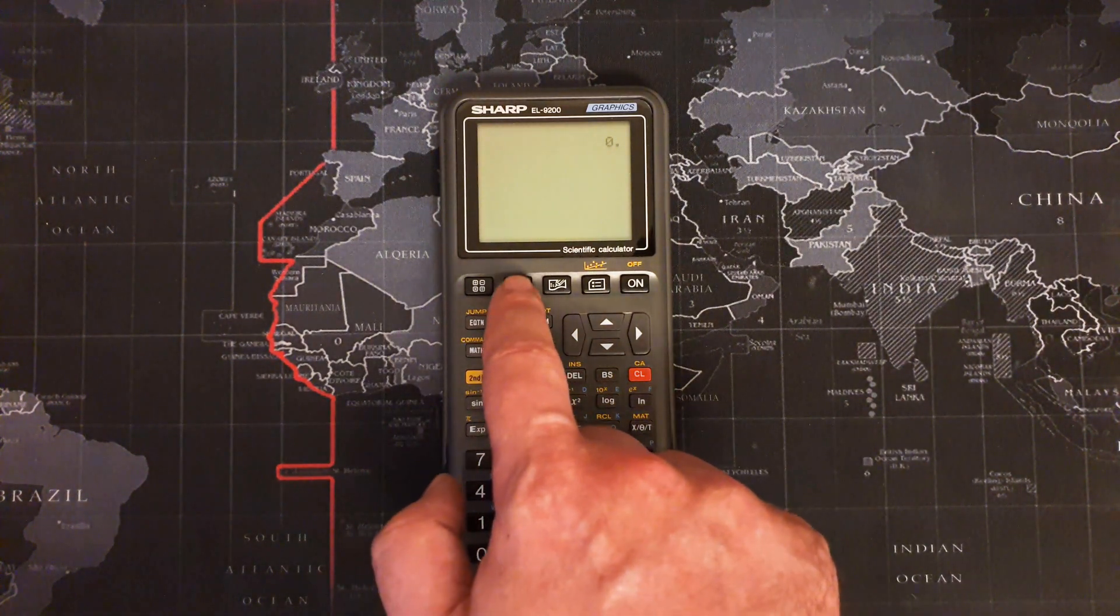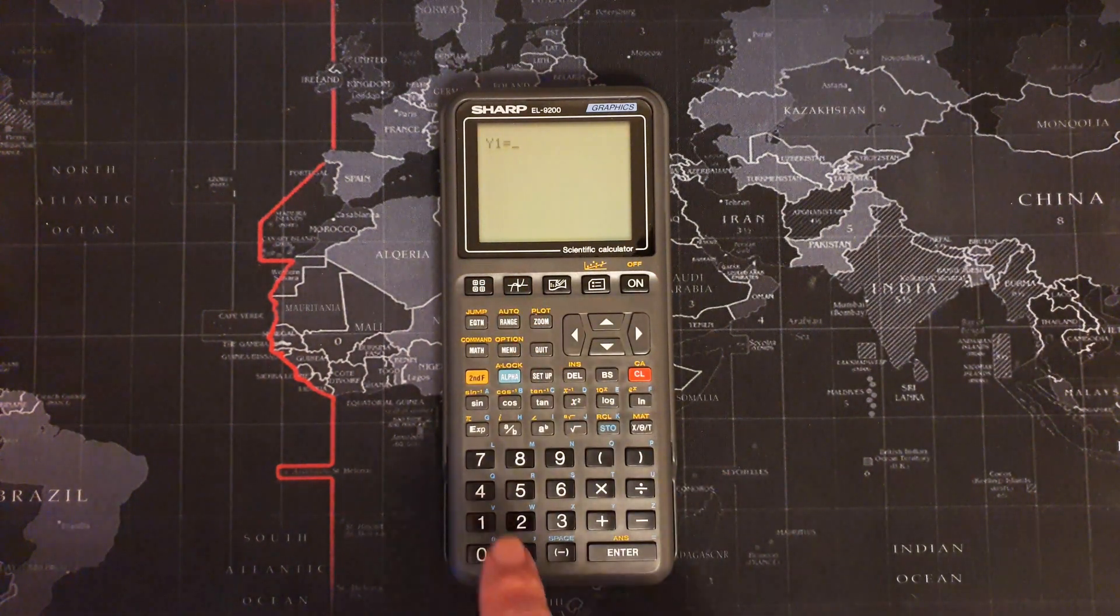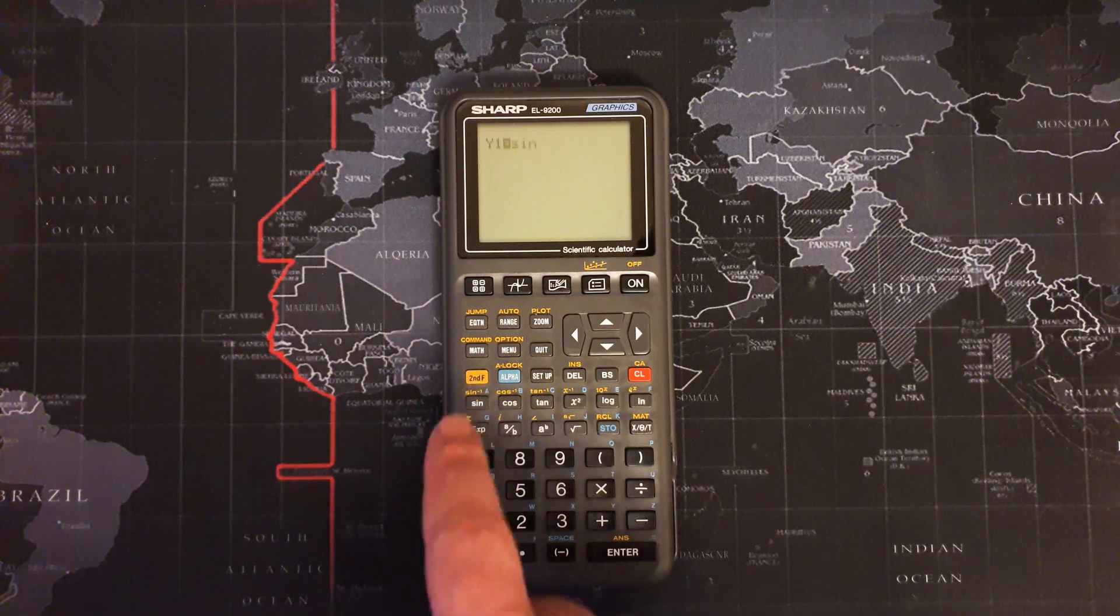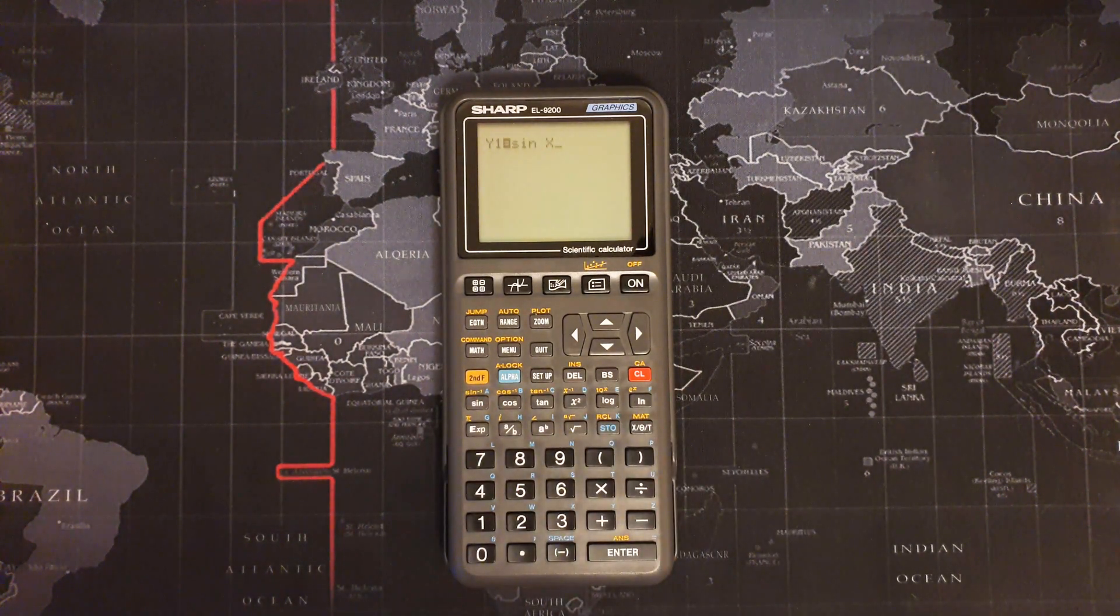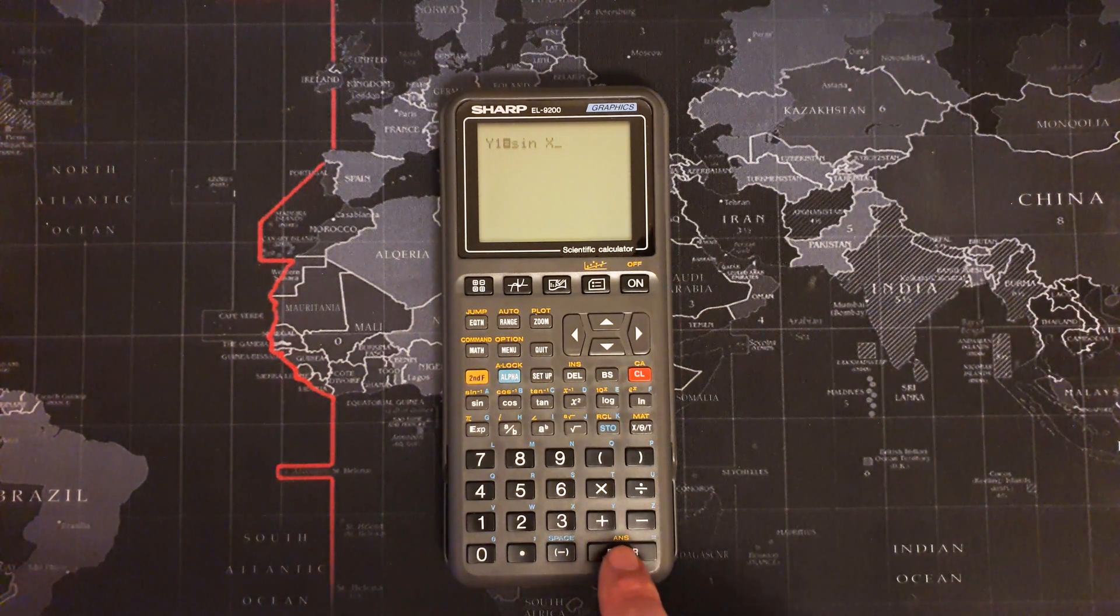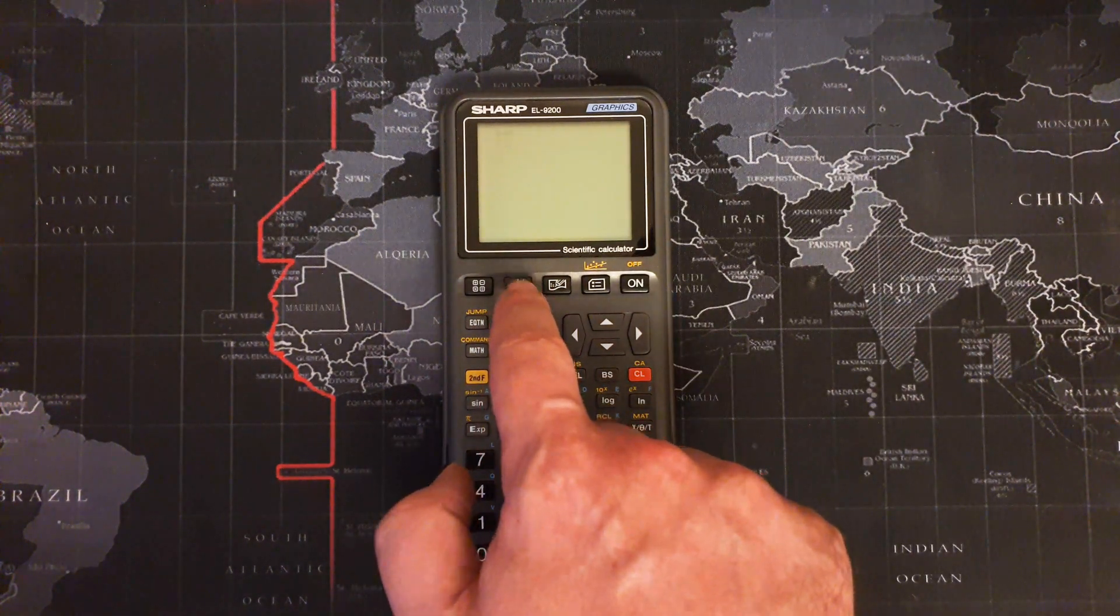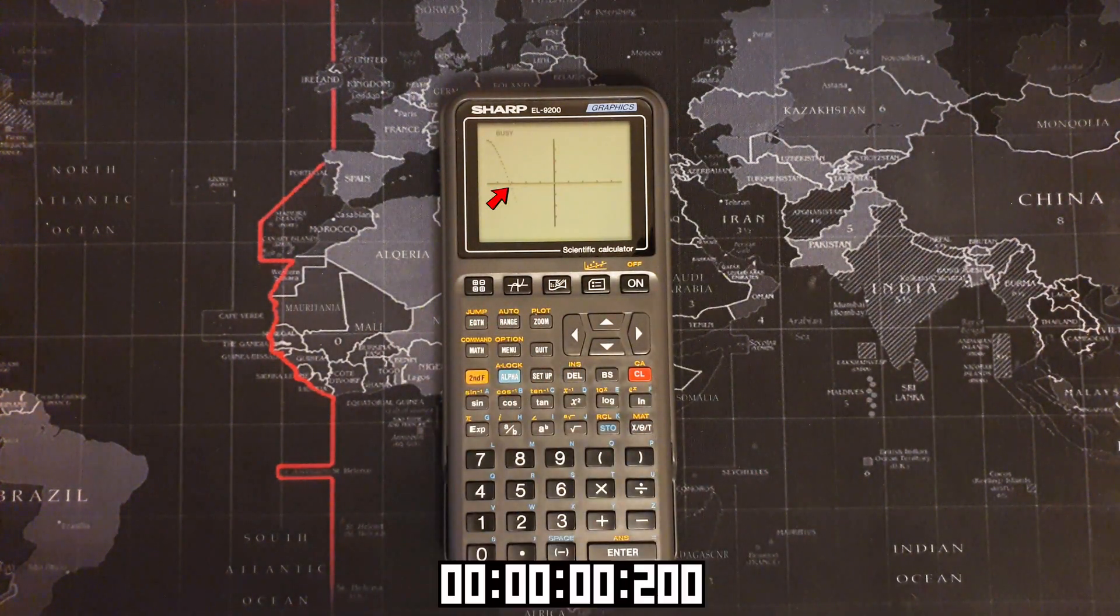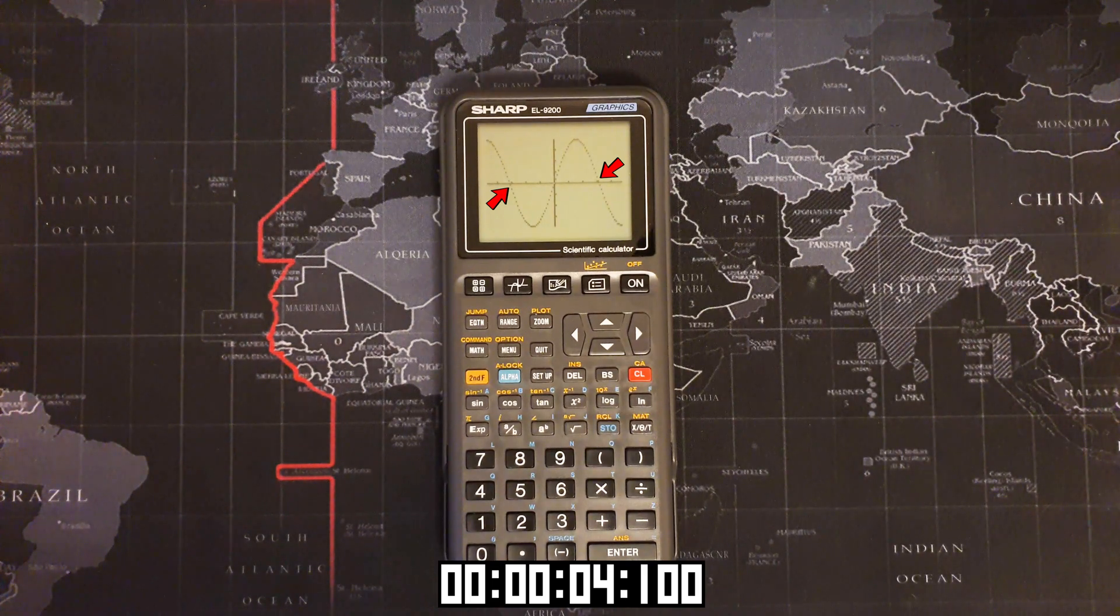Let's look now at the graphing and see how fast that is. Let's start with something simple: y equals sine of x and go. 4.1 seconds.